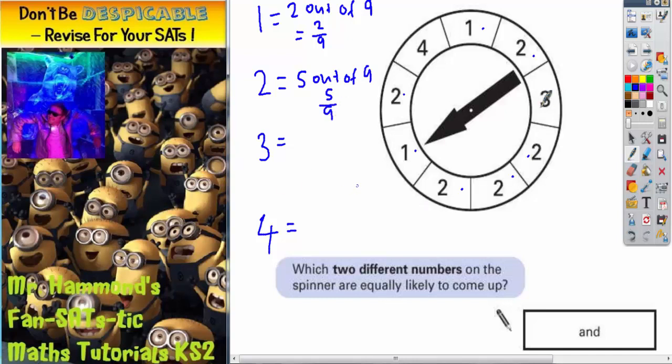Number 3, there's only one 3 there, so that's 1 out of 9, or 1 ninth. And the number 4 is the last one that we haven't put any dots on yet. It's that one. So there's only 1 out of 9, which is 1 ninth.